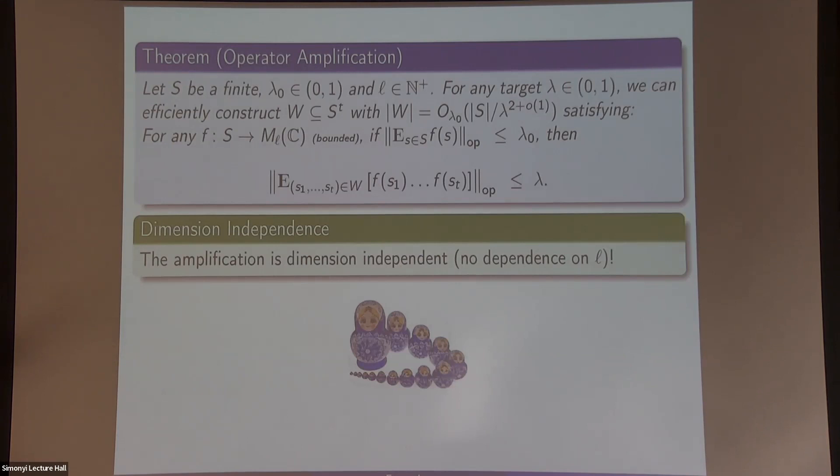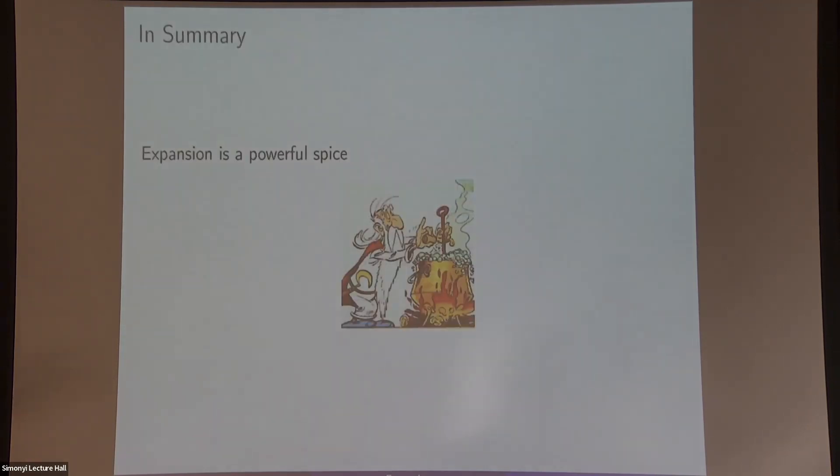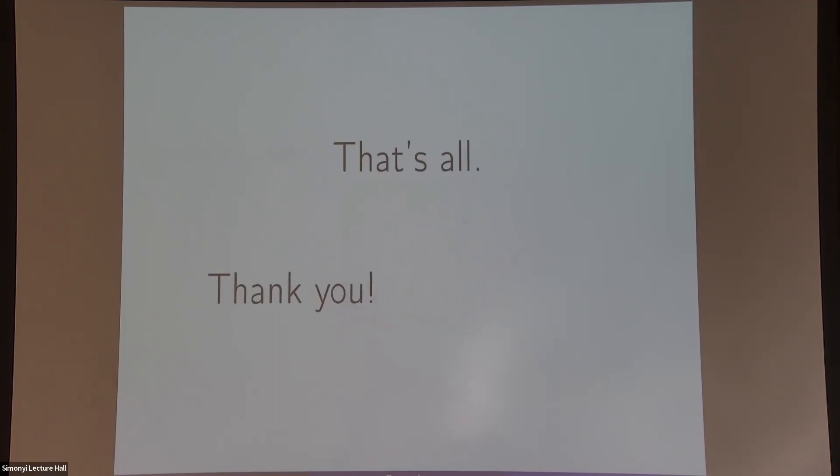There are two very curious features in this. It's completely dimension independent, so you can amplify, it doesn't matter the dimension of the matrices. If you try to do this using some naive form of a matrix union bound, you pay huge factors in the dimension. So this is an explicit thing that's dimension independent. The second big feature is that this W is sort of universal. A single collection W that you construct can amplify infinitely many functions. So you construct it once, very explicitly, and it amplifies everything for you. So all in all, I think expansions are very powerful, spies extremely useful in applications, and if you want to play with expansion, please let me know. Thank you very much for your attention.